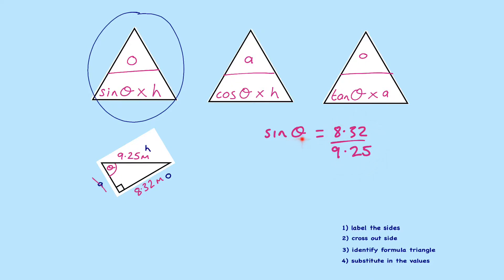So sin theta equals 8.32 divided by 9.25. But I want to find out what theta is, so you do the inverse sin of 8.32 divided by 9.25. To do that, you press the SHIFT and then the SINE button on the calculator. That brings up sin to the minus 1. Then type in 8.32 divided by 9.25 in brackets. And the answer theta is 64.1. So your angle theta is 64.1.